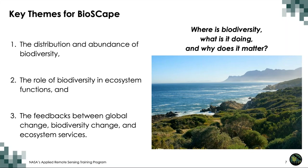The key science themes for BioSCAPE include the distribution and abundance of biodiversity — largely a mapping exercise to understand how we can use these sensors to quantify the spatial and temporal variation in where different species exist. The second theme is to understand the role of that diversity in ecosystem functions: how do the species present at any location contribute to the overall functioning of that system and the downstream services provided to people and other ecosystems? And finally, getting at the feedbacks between global environmental change and change in that biodiversity. Summarized simply: Where is biodiversity? What is it doing? And why does it matter?